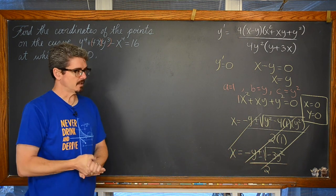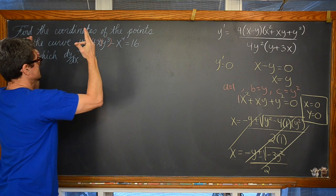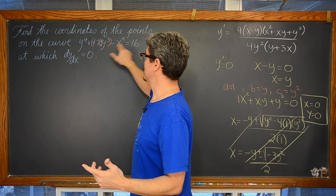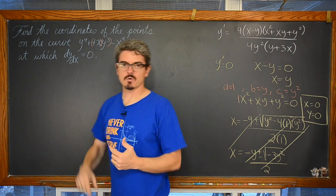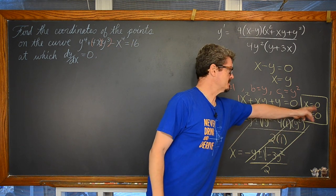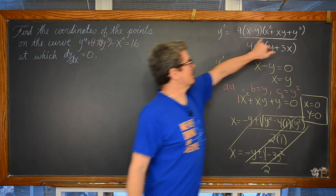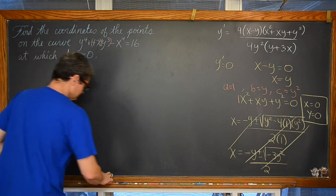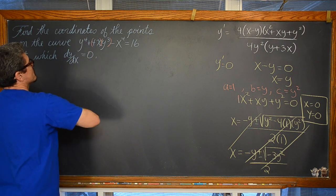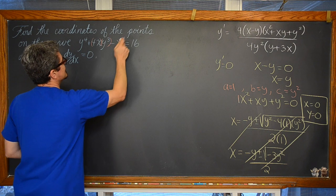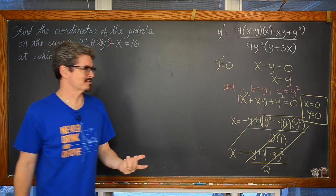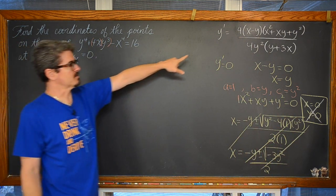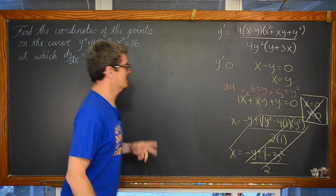We could note that x squared plus xy plus y squared equals zero when both x and y equal zero. But is (0, 0) actually on the curve? Plugging in: 0 to the fourth plus 4 times 0 times 0 to the third minus 0 to the fourth equals zero, which is definitely not equal to 16. So (0, 0) is not a solution to the original equation — this is simply a no go. We do know that from the (x minus y) factor, the derivative equals zero when x equals y.